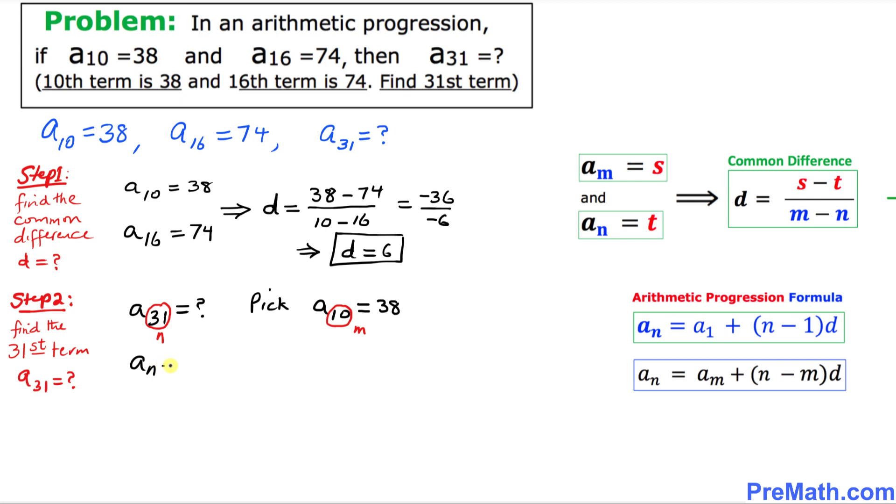A sub n equals a sub m plus n minus m times d. Let's fill in the blanks right now over here. We know that a sub n is a sub 31, I'm gonna write down just right here a sub 31, and in our case a sub m is a sub 10 plus in our case n is 31 minus a sub n is 10, and we know from the previous step d is 6.